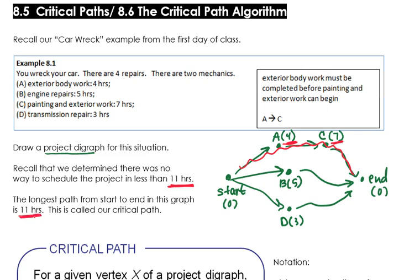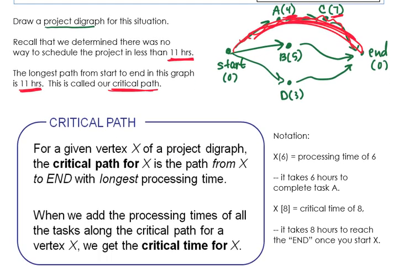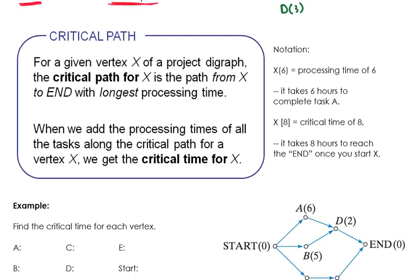The longest path from start to end in your problem is called the critical path. Our critical path is the path from start to A to C to end. That's going to tell us the minimum finish time for this problem. Every project has some point where you cannot go any lower than a certain finish time. It doesn't matter if I have 100 people willing to work on this project — I will not be able to get it done in any less than 11 hours. The critical path for a vertex describes how long it's going to take to get done with the project from that point. For a given vertex X of a project digraph, the critical path for X is the path from X to the end with the longest processing time. When we add the processing times of all the tasks along the critical path, we get the critical time for X.